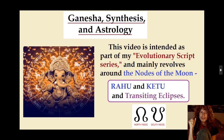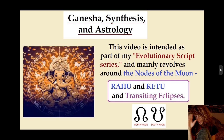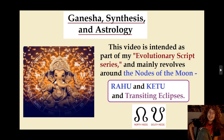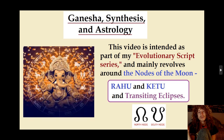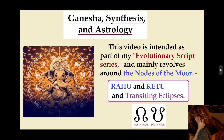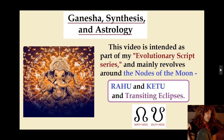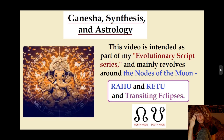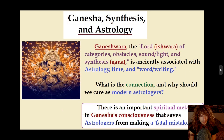This is intended as part of my evolutionary script series, and what we're getting down to here is discussing how Ganesha relates to the revolution of the nodes of the moon — Rahu and Ketu — and the transiting eclipses. Closer to the latter part of this video we're going to get into that. Now we're going to do a little review about Ganesha.